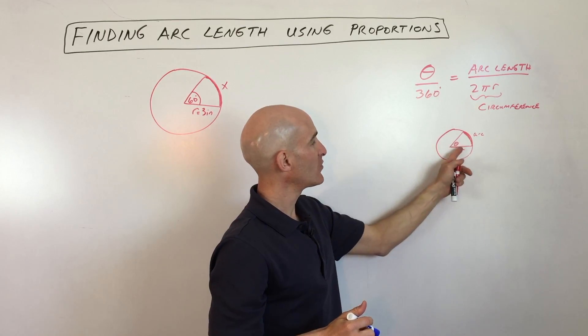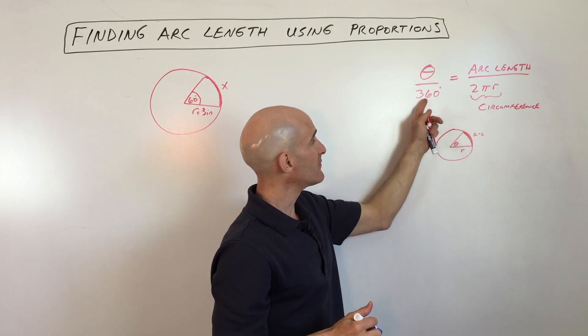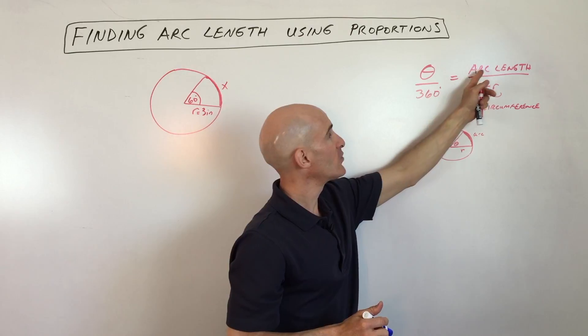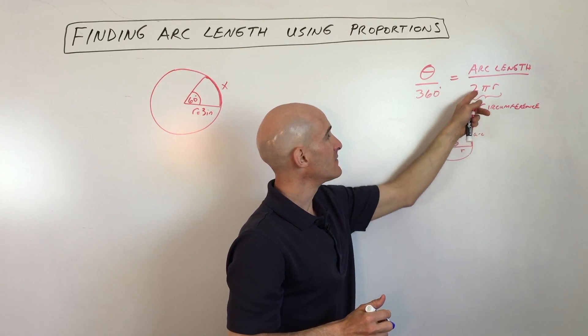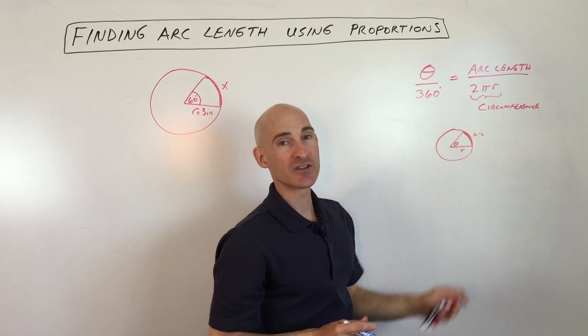We're going to take theta, which is the central angle here, divided by 360, equals the arc length, which is this length here, divided by the entire circumference.